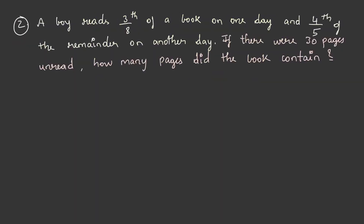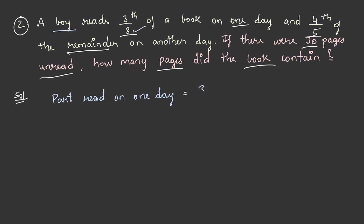Let us solve another question. A boy reads 3 by 8 of a book on one day and 4 by 5 of the remainder on the other day. If there were 30 pages unread, how many pages did the book contain? Let us solve this. A boy reads 3 by 8 of a book in one day, so the part read on one day is 3 by 8.